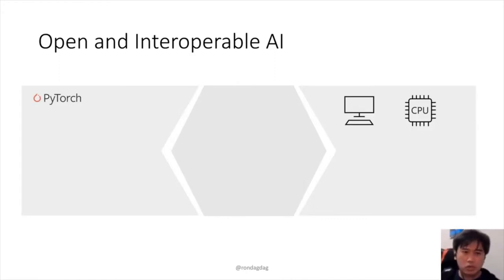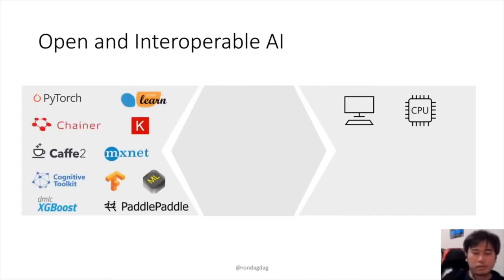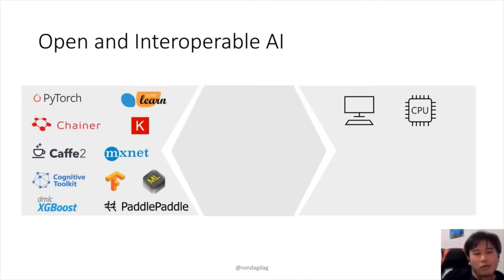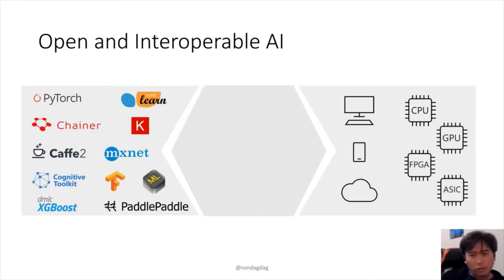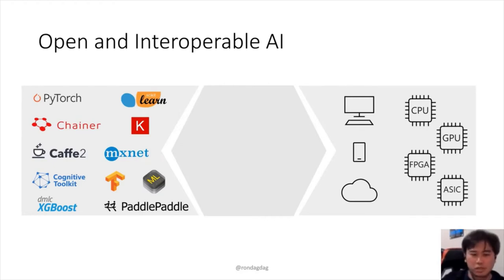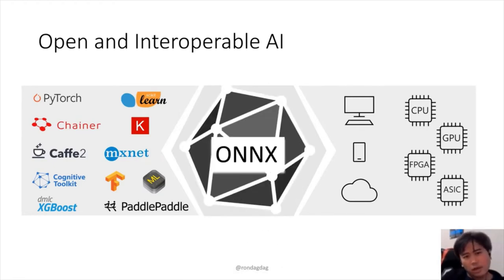Typically when you create a model, a lot of developers do it in PyTorch and run it locally. Just as there are many front-end JavaScript frameworks, in the AI world there's PyTorch, TensorFlow, scikit-learn, Keras — a lot of people use PyTorch these days. When you want to deploy it, it's not just desktop anymore: sometimes you do it in the cloud, sometimes on the phone, all these different places with CPU, GPU, and all these processing units. That's what ONNX does.